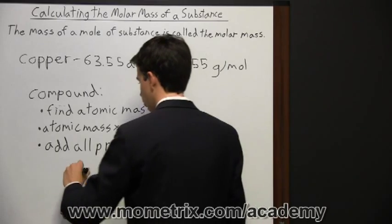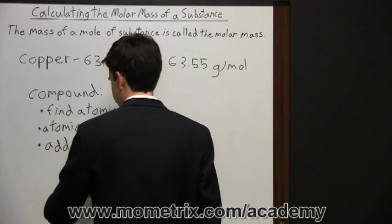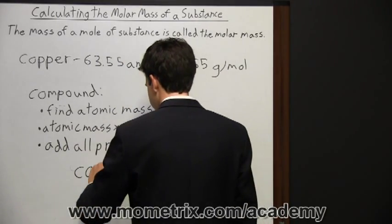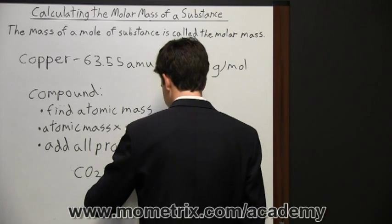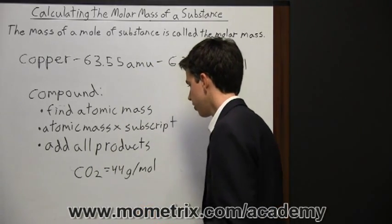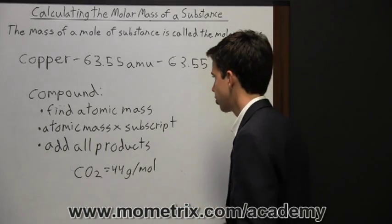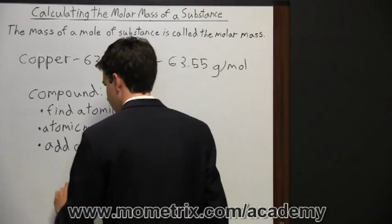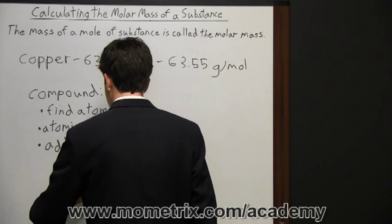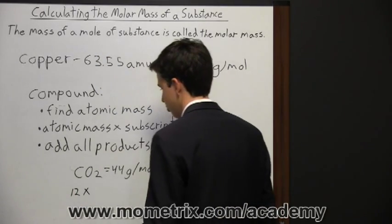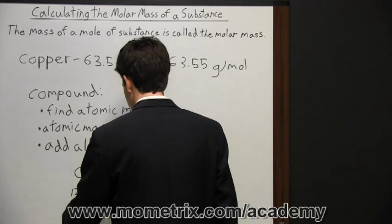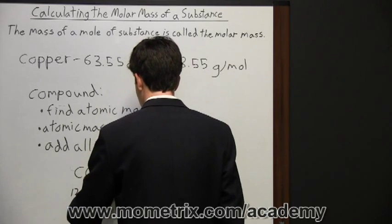So if you were trying to find the molar mass of the compound carbon dioxide, which looks like this, CO2, and the molar mass is 44, then the way you would find that is first you would find the atomic mass of carbon, which is 12, and then you'd multiply it by the subscript, which is just an understood one right there. And so the product there would be 12.